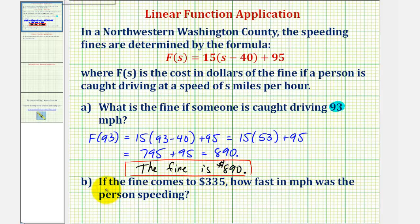Now for part b, if the fine comes to 335 dollars, how fast in miles per hour was the person speeding? So here they're giving us the function output, or the fine. We want to find the input s, or the speed, that gives a fine of 335 dollars.